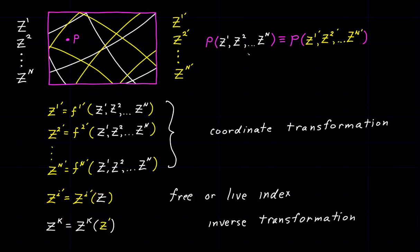A couple more comments before we end the video. I used the letter k — why? Because I could. One of the rules of free or live indexes is that I can use any letter I want. It is not the particular choice of variable that matters; it's the fact that I use a free or live index. The fact that there's a live index tells me that we're dealing with multiple expressions at the same time, always equal to the number of dimensions in the space we're working with.